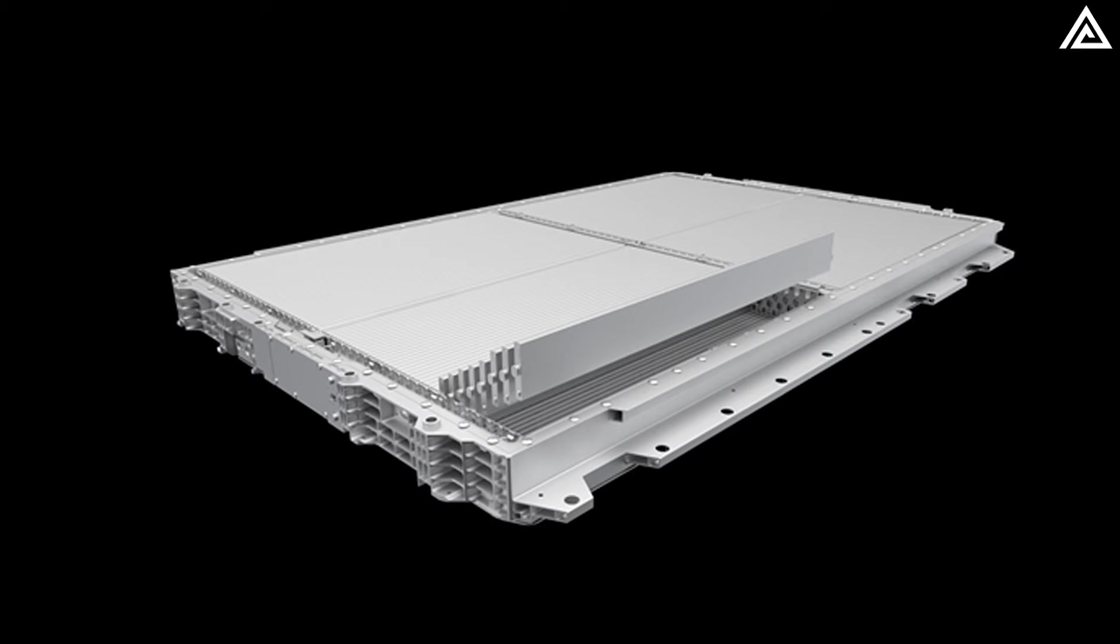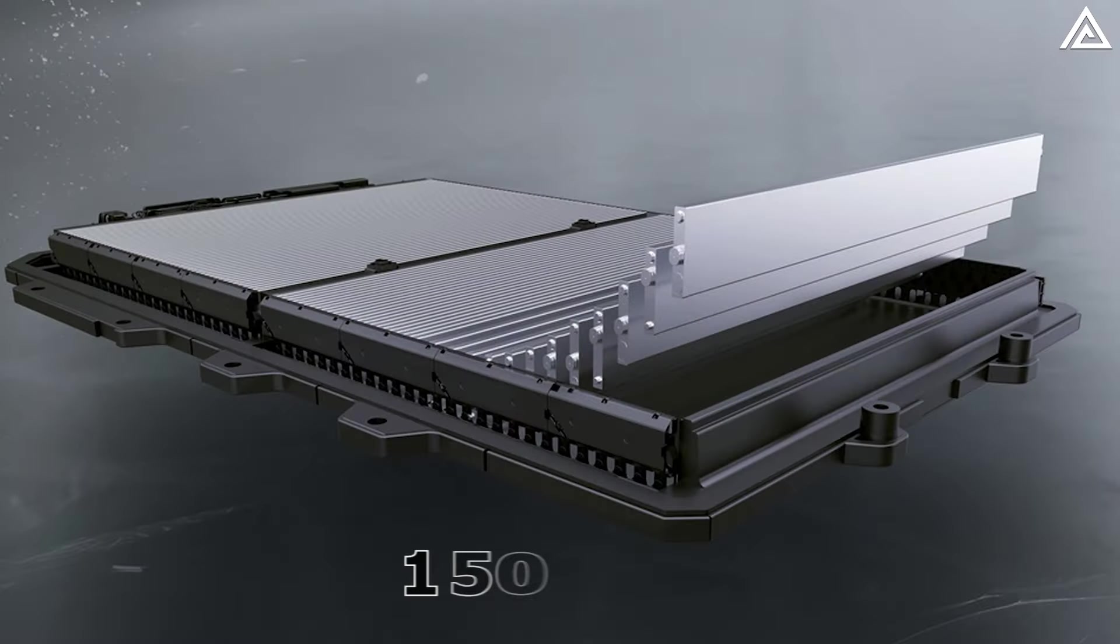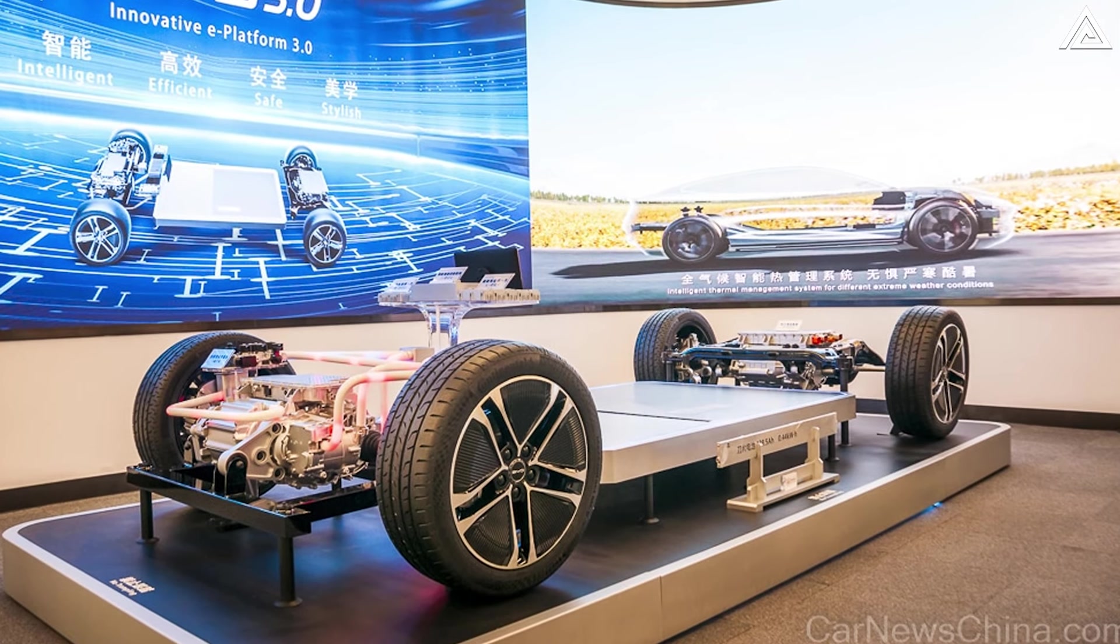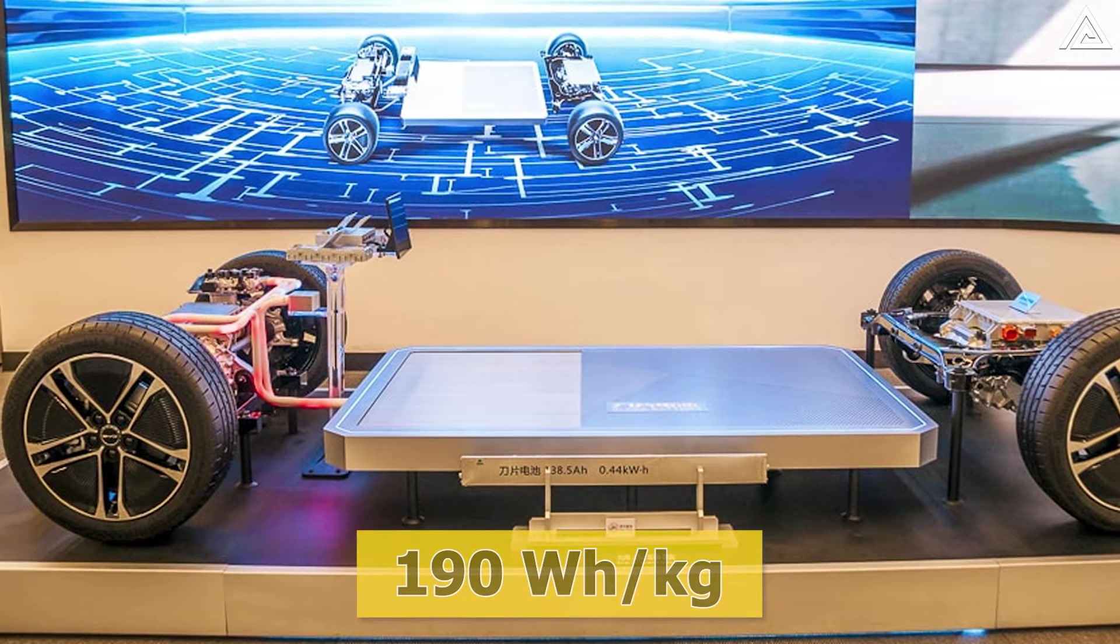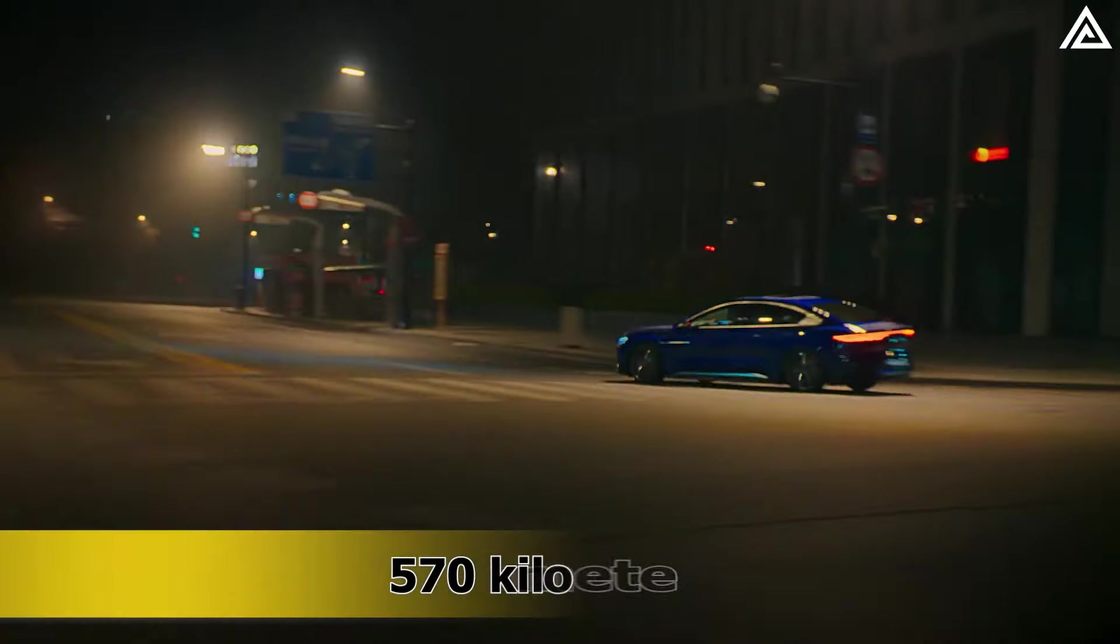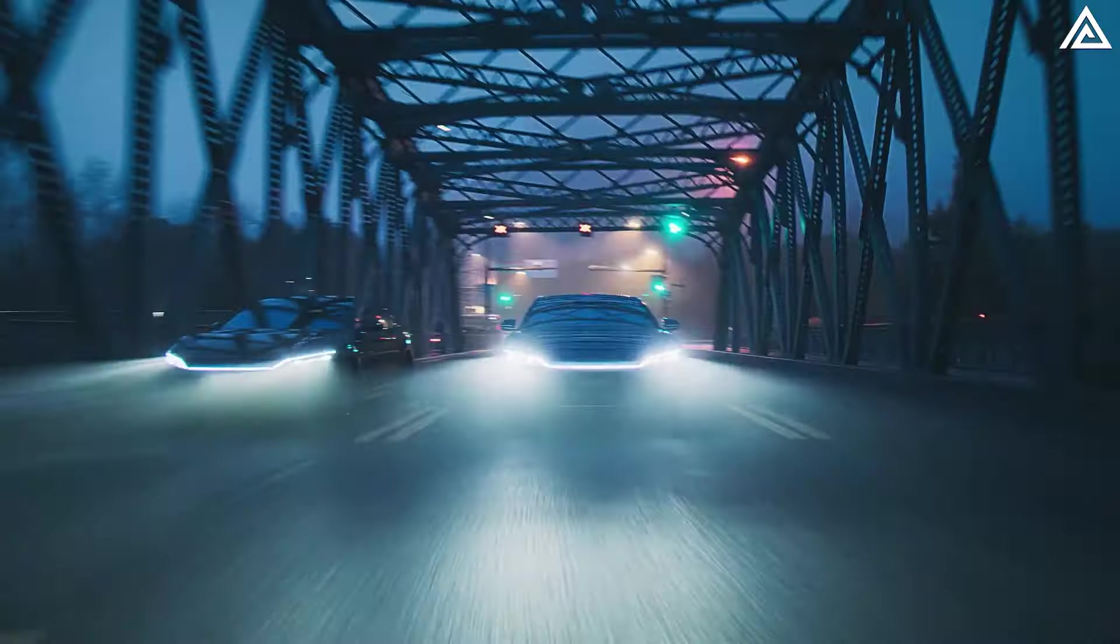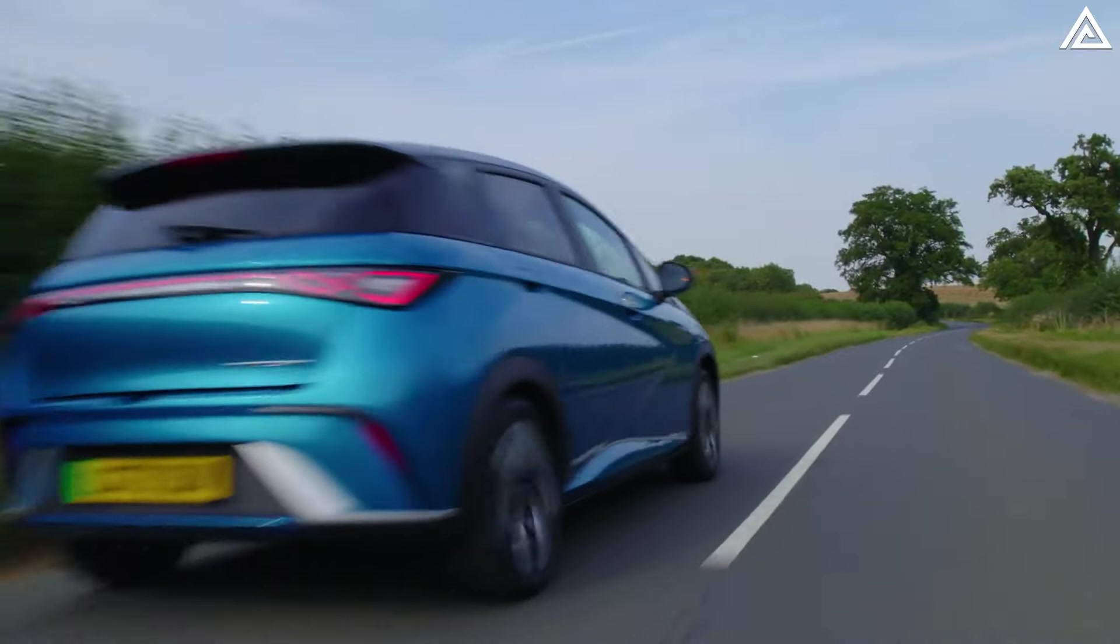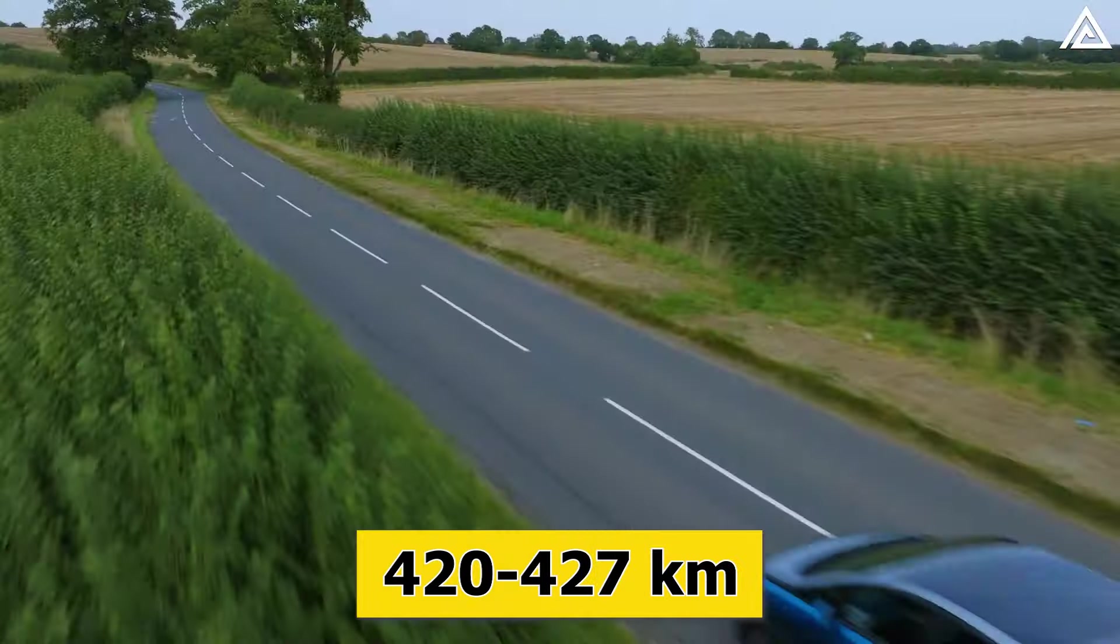The first-gen Blade launched with an energy density of 140 Wh per kilogram, which later improved to 150 Wh per kilogram. Now, the Blade 2.0 promises a substantial jump to 190 Wh per kilogram. To illustrate, BYD's SEAL Sedan in Australia boasts the highest WLTP range at 570 km from an 82.6 kWh battery, while the compact Atto 3 SUV and Dolphin hatchback deliver WLTP ranges of 420 km and 427 km, respectively.